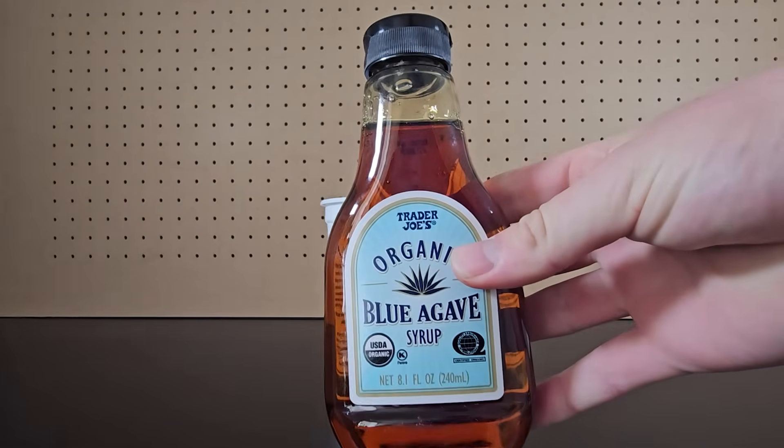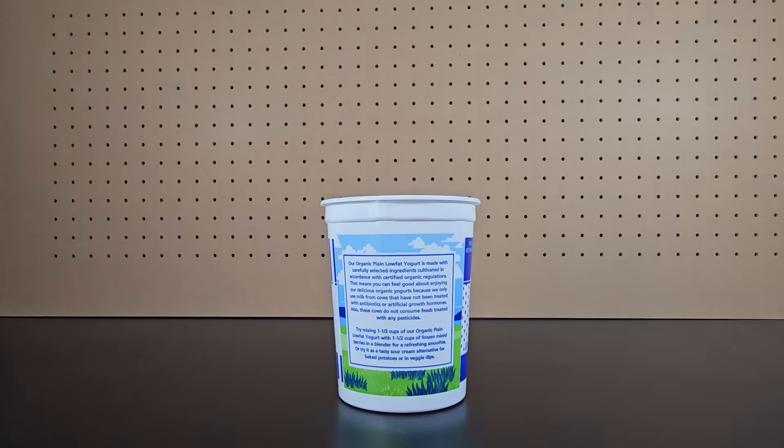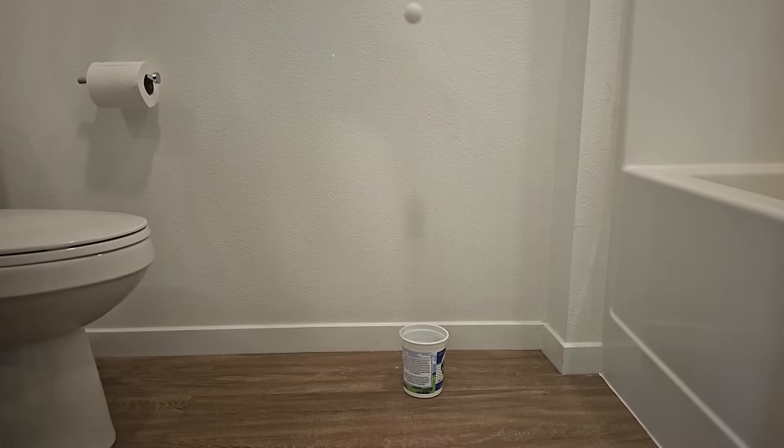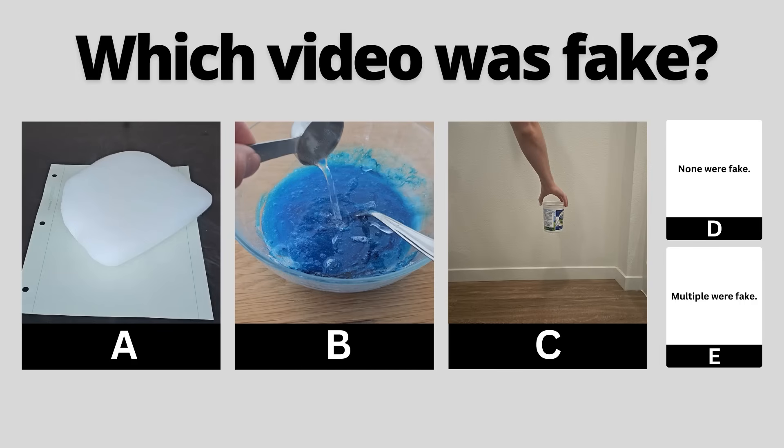If you take a very viscous substance like this syrup and add it to a container you can place a ping pong ball in this container and when you drop it the ping pong ball will shoot up. You've seen all three videos now, pause to vote in the comments which one you thought was fake.